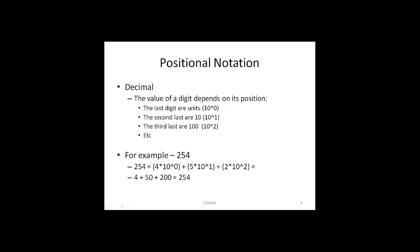The value of a digit depends on its position. The last digit represents units, the second last represents tens, and the third last represents hundreds. For example, looking at the number 254: the 4 is in the units place, the 5 is in the tens place, and the 2 is in the hundreds place.